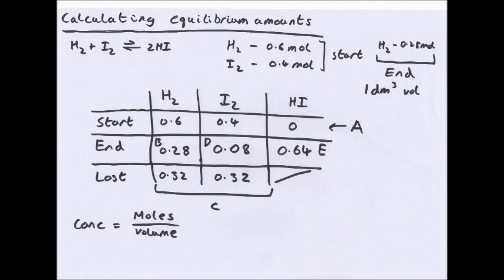Here's a table. You have start, end, and unlike the book I also have a lost row. This just helps a little bit. So at the start, you write in your starting amounts in moles: 0.6 mol of hydrogen, 0.4 mol of iodine, 0 mol of hydrogen iodide. Then in the end, you are told you have 0.28 mol of hydrogen.